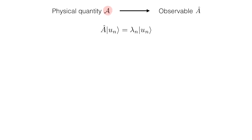We know from postulate 2 of quantum mechanics that such a physical quantity is associated with a Hermitian operator A, that is called an observable. To understand what it means to measure operator A in quantum mechanics, the key equation we need to consider is the eigenvalue equation of the operator A.